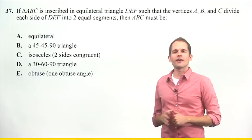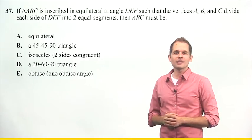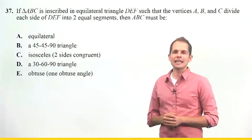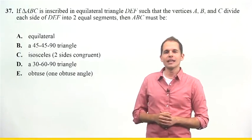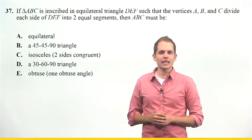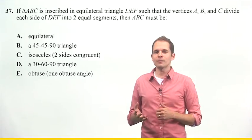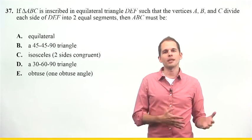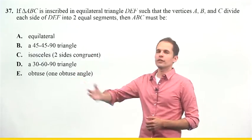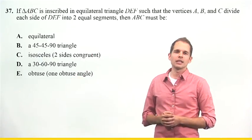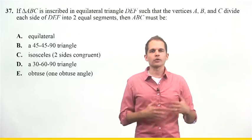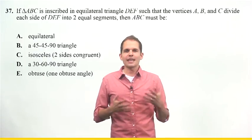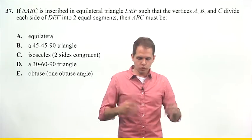Question 37 asks, if triangle ABC is inscribed in equilateral triangle DEF, such that the vertices A, B, and C divide each side of DEF into two equal segments, then ABC must be. And then it gives me a bunch of different options for triangle types in the answer choices. Now, whenever they're describing triangles or other geometric figures, and they don't provide them, you should draw your own.